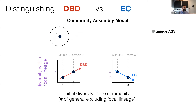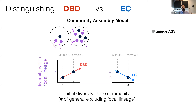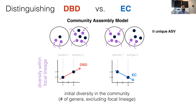In the community assembly model, starting with one unique ASV from a genus allows two migrants to arrive from our focal genus. Under DVD, more initial diversity in the community provides more niches and positive feedbacks. Under the EC model, there is essentially a set carrying capacity: if we start with one ASV there is room for four more, but if we start with three there is room for only two more — giving rise to a negative relationship.